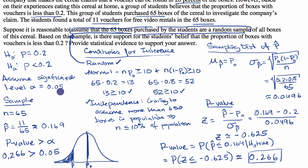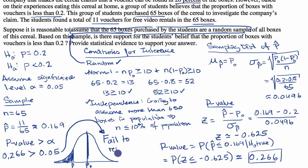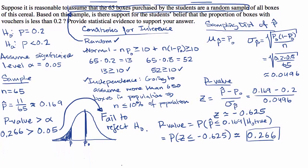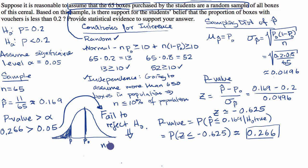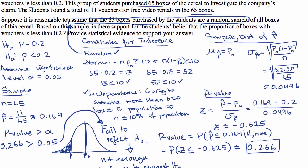What we were saying is: if there was less than a 5% chance of getting the sample proportion that we got, then we would reject the null hypothesis, which would suggest the alternative. But here, the probability of getting the sample proportion that we got, if we assume that the null hypothesis is true, is almost 27%. That's well above our significance level. So we fail to reject our null hypothesis — meaning there is not enough evidence to suggest that less than 20% of the boxes have the free video rental voucher.